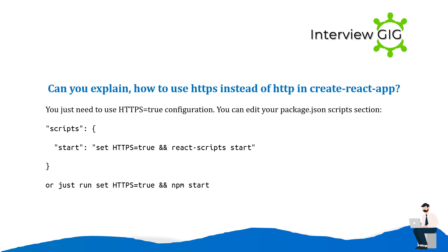Can you explain how to use HTTPS instead of HTTP in create-react-app? You just need to use the HTTPS=true configuration. You can edit your package.json scripts section: "scripts": { "start": "set HTTPS=true && react-scripts start" }. Or just run: set HTTPS=true && npm start.